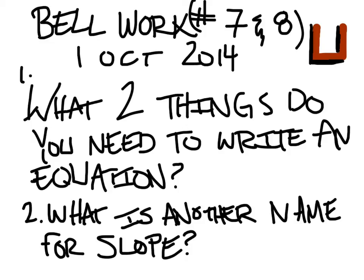What two things do you need to write an equation? Tomas? You need symbols and numbers. Nope. Zion? None of those two are right? None. Not necessarily. You need an equation. Nope. You need two things. Slope and y-intercept. Very good.